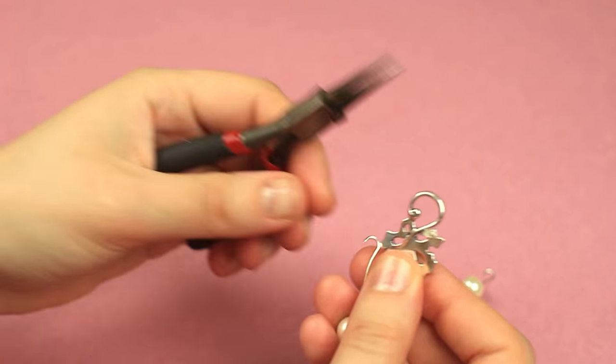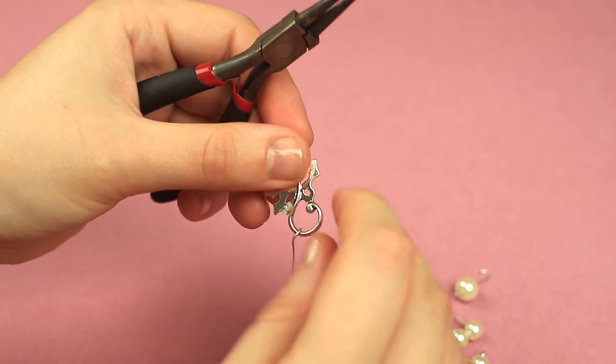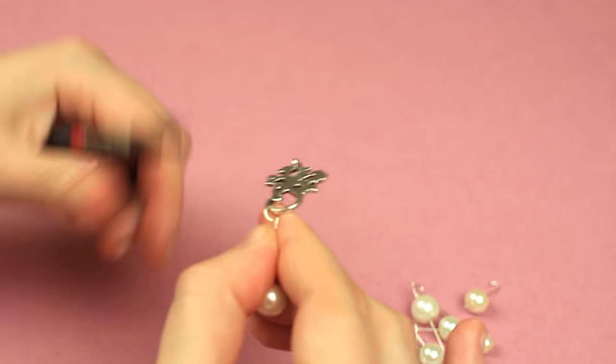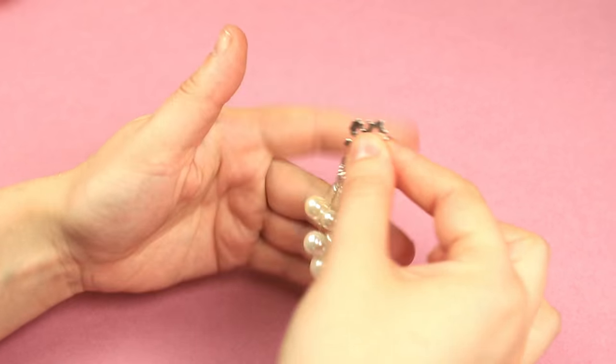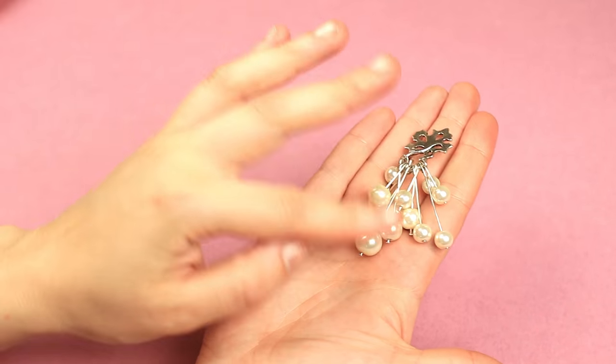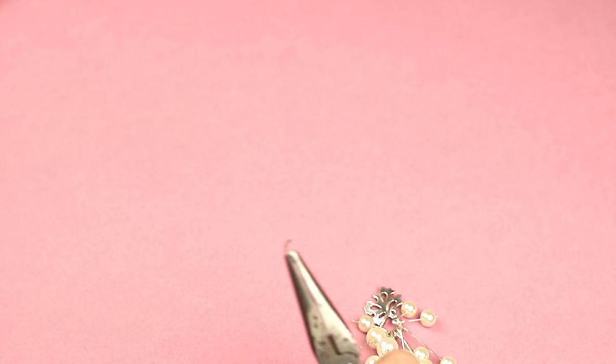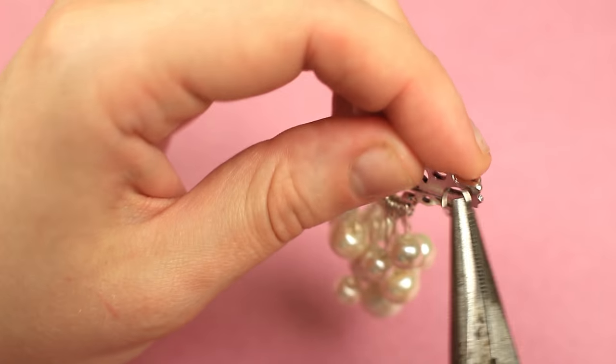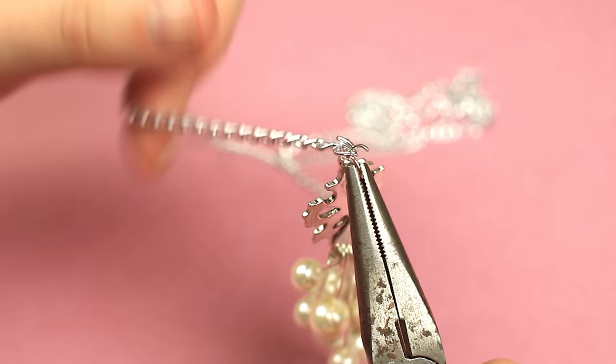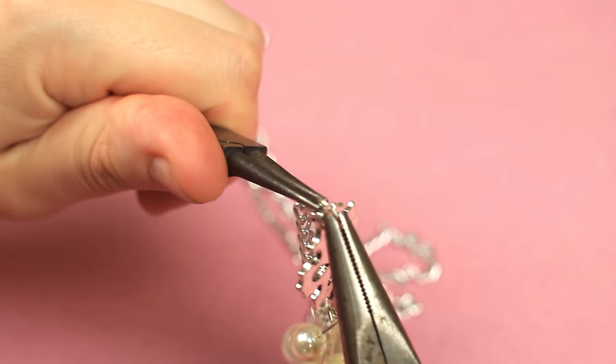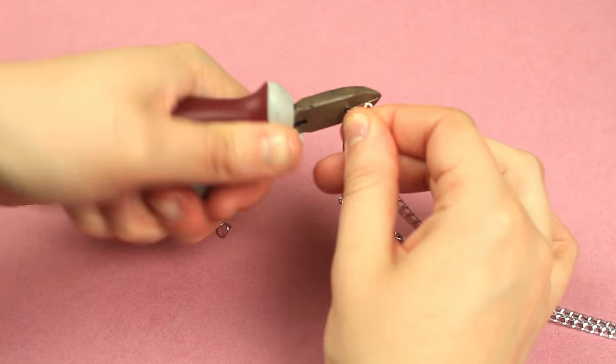Open a loop, put the detail onto a filigree clasp, and close the loop. Put on other bead elements in the same way. We've got a beaded bunch. Pass a jump ring through a hole on the other side of the clasp. Put a chain onto the open ring and close it.